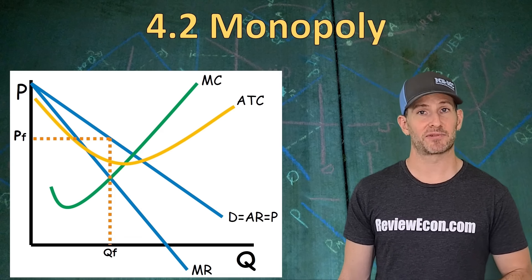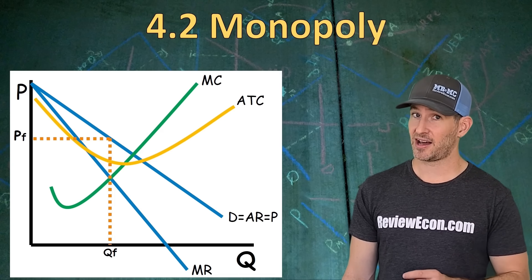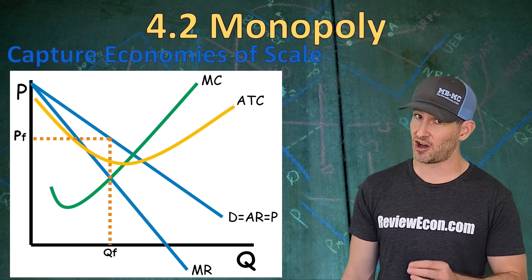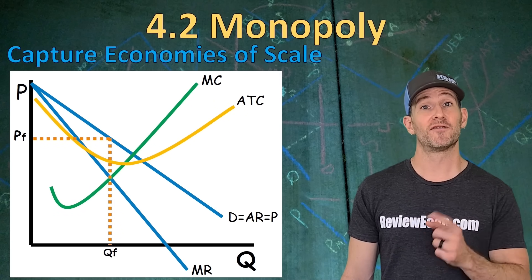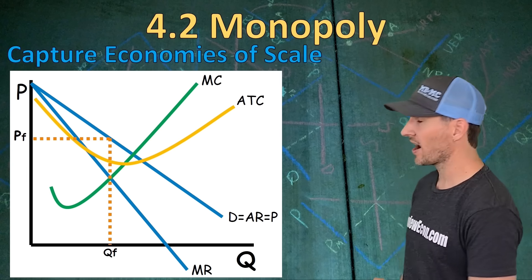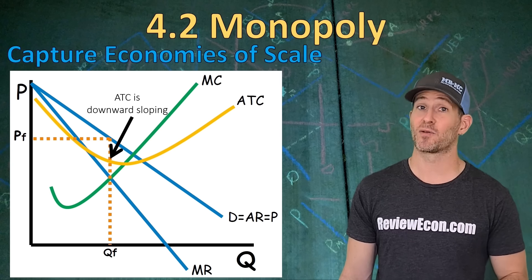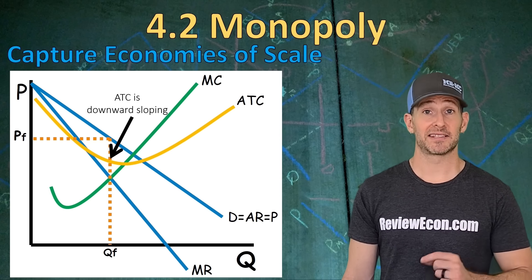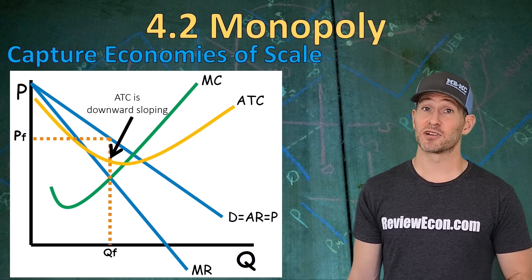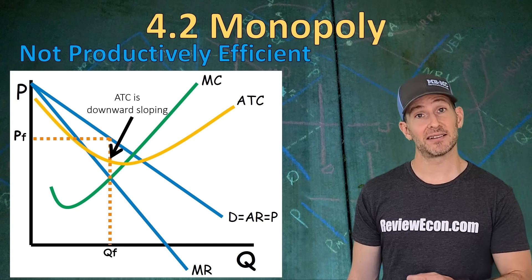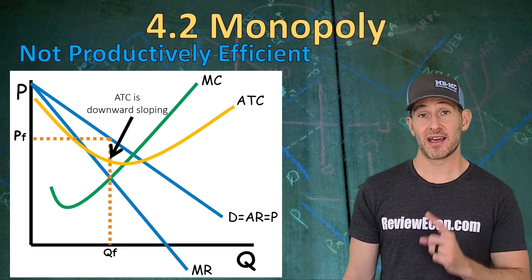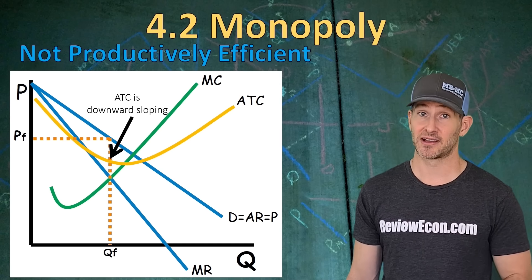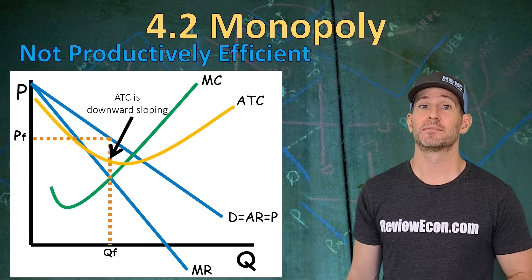Economies of scale means that you are producing in the downward sloping portion of the long run average total cost curve. For a monopoly, since their average total cost curve is downward sloping at the quantity they're producing, this firm captures economies of scale. It is important to note that this firm is not productively efficient, because they are not producing at the minimum of the average total cost — that would be the quantity where the marginal cost intersects the average total cost. Monopolies are not productively efficient.